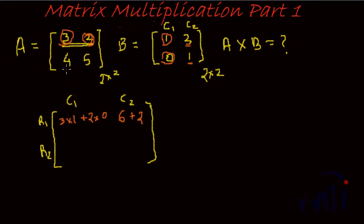And similarly, now we got row 1 of the resultant matrix. How do we get row 2? We take row 2 and play with column 1 and column 2.